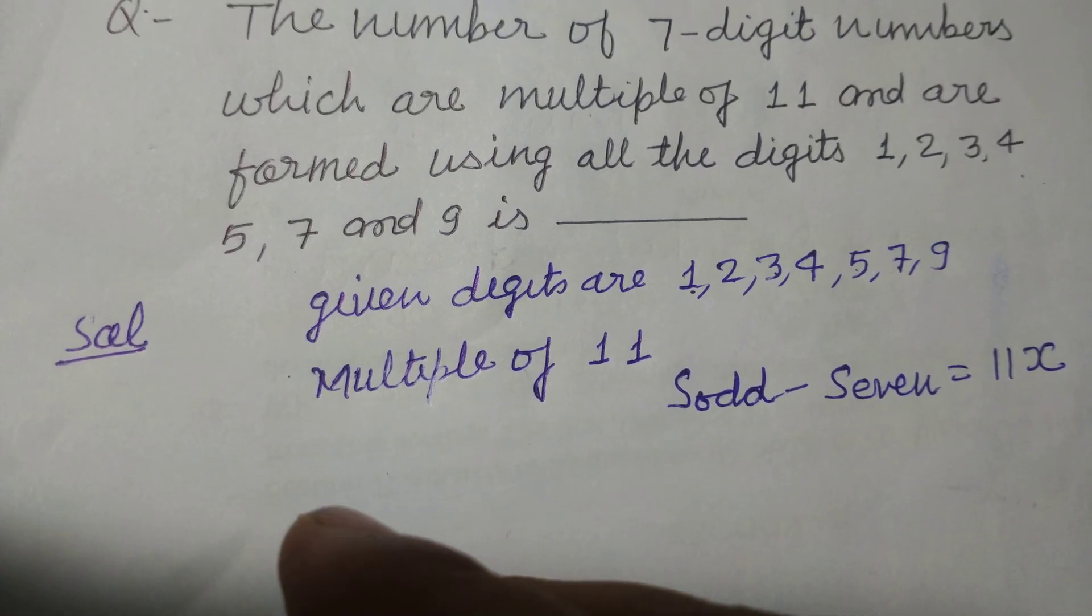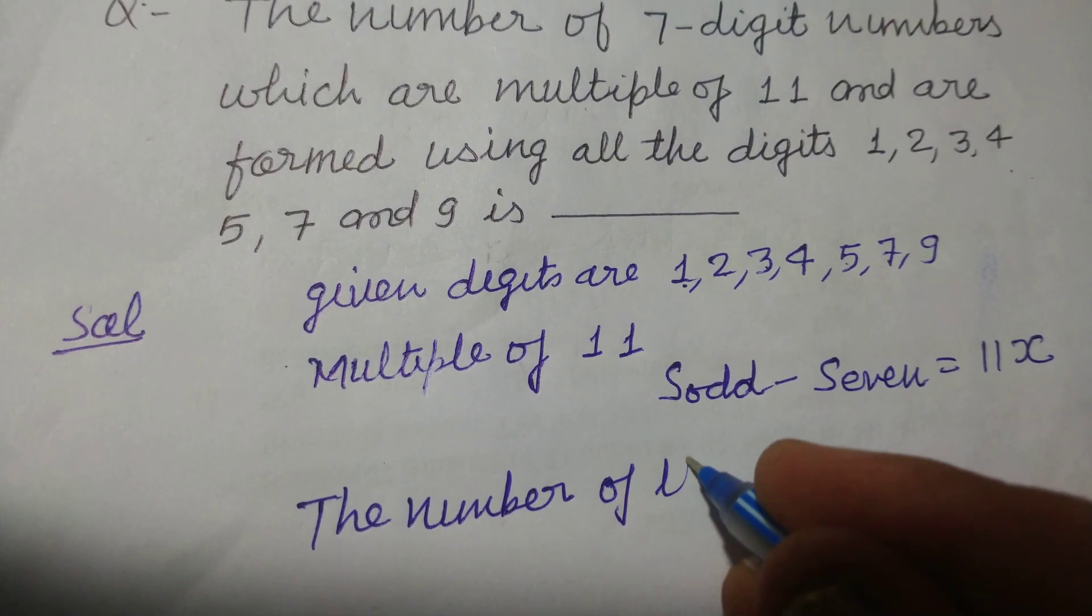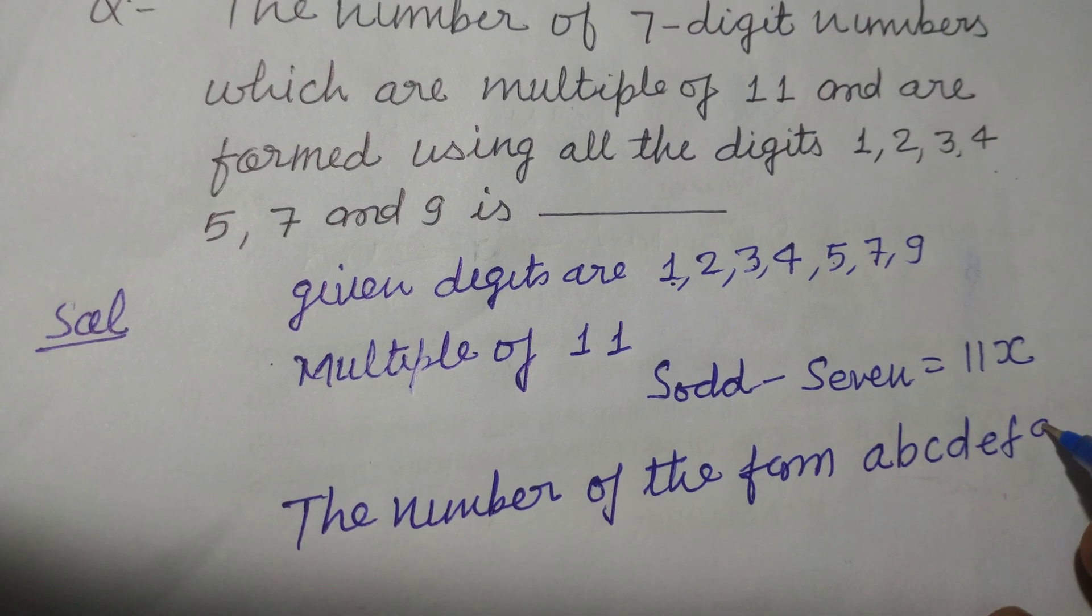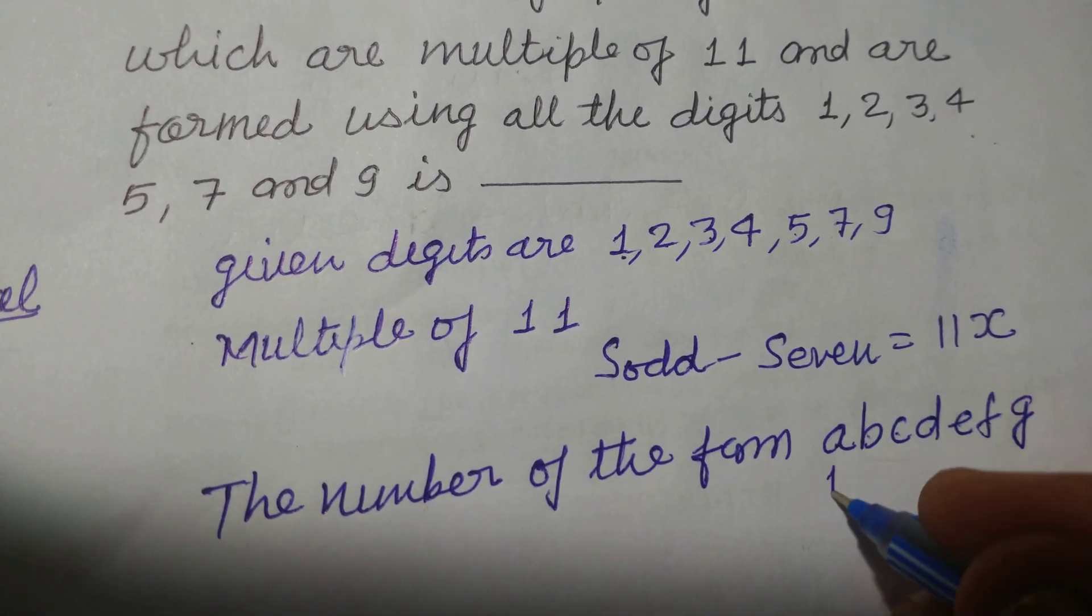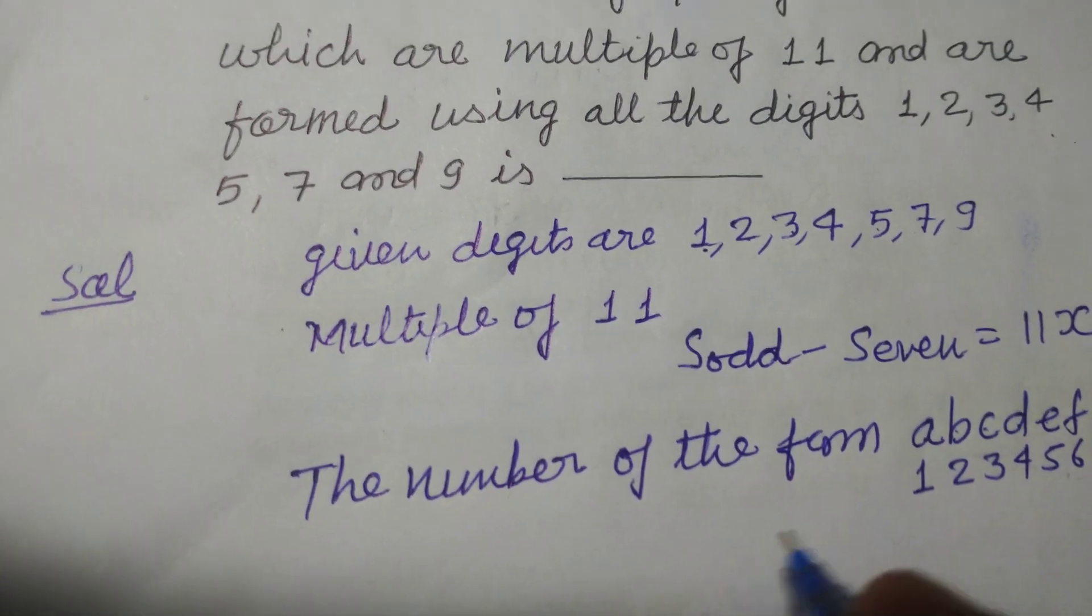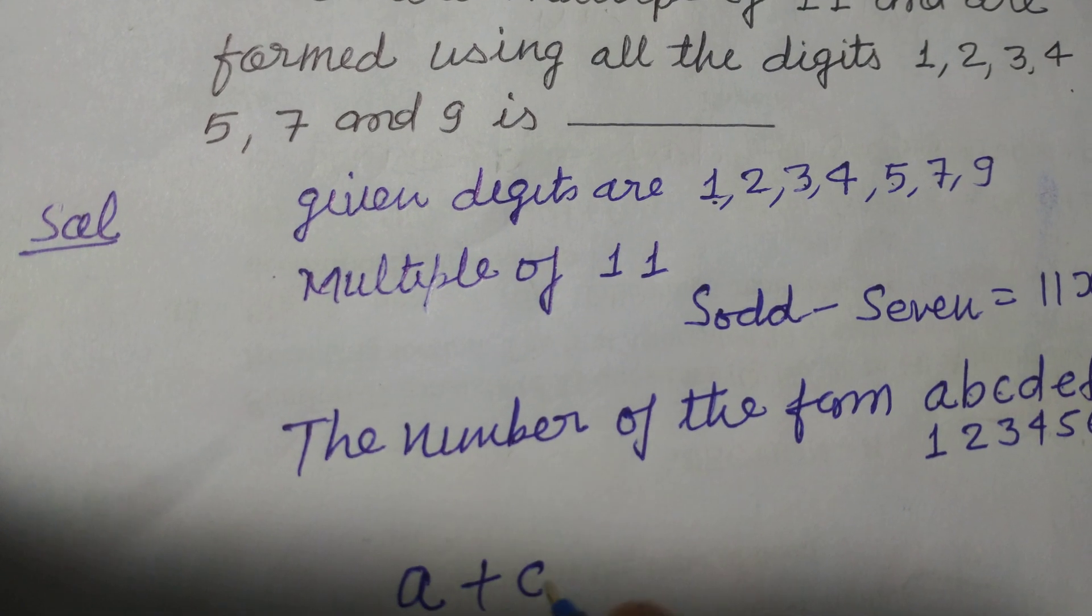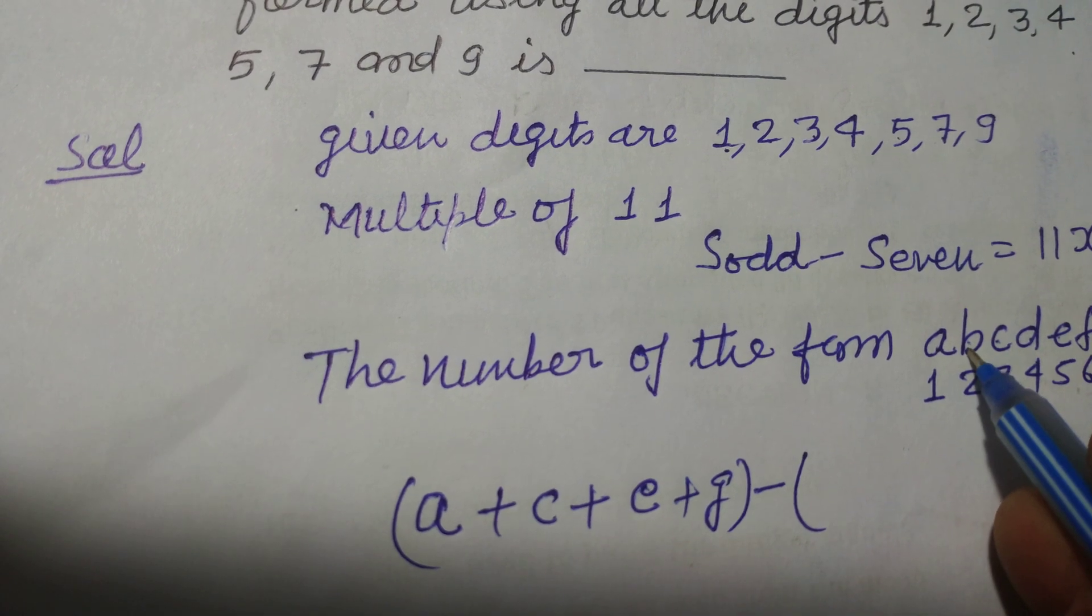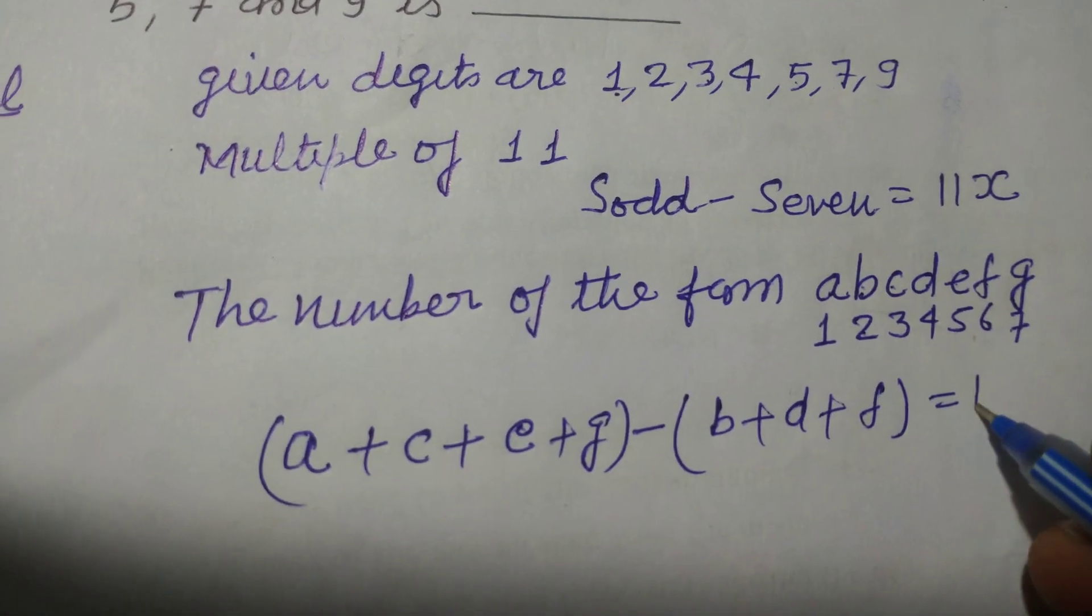The number is of the form ABCDEFG, 7 digits. So we number the positions 1, 2, 3, 4, 5, 6, 7. Therefore, the sum of odd position digits A + C + E + G minus sum of even position digits B + D + F should be multiple of 11.